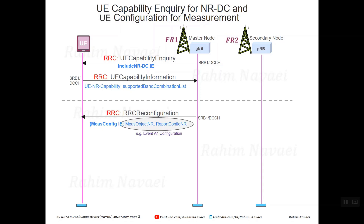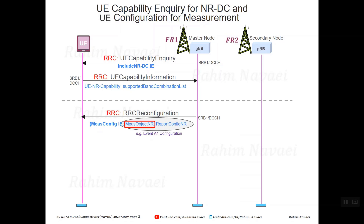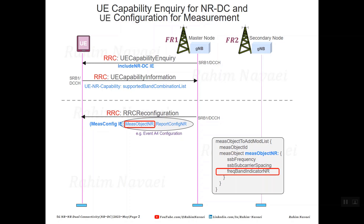The master gNB includes a measurement object for New Radio in the RRC reconfiguration message to provide the device with information about the SSB frequency, subcarrier spacing, and frequency band indicator in FR2.